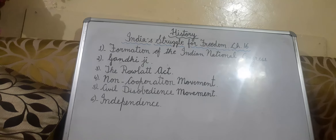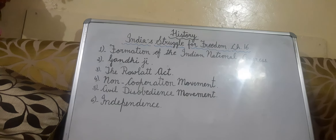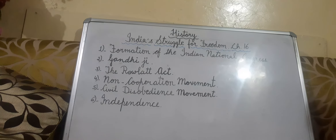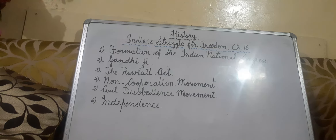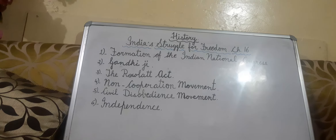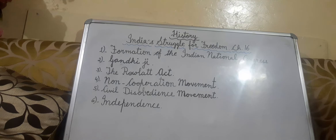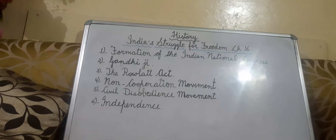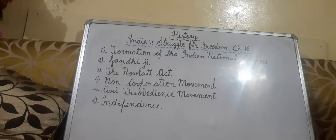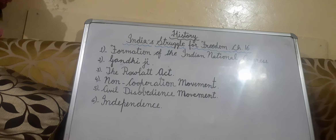Gandhiji was born at Porbandar in Gujarat on 2nd October 1869. He went to South Africa to practice law. In South Africa, he realized that the Indians were treated badly by the Europeans. As a man who believed in justice, Gandhiji struggled against this bad treatment for nearly 20 years. He based his struggle on truth and non-violence.